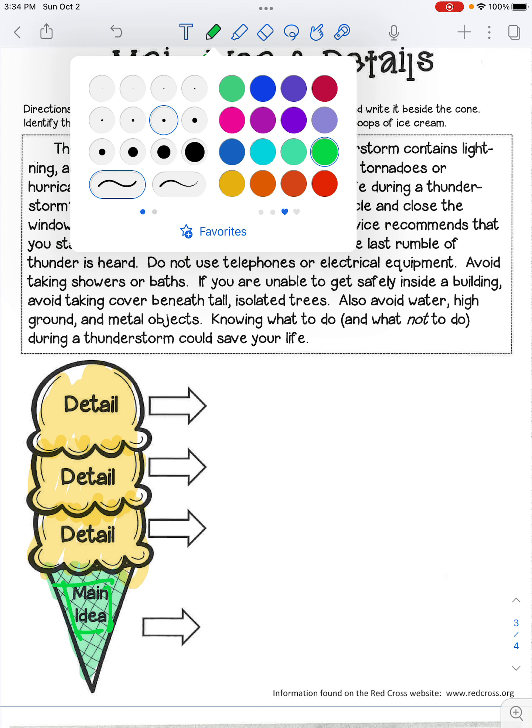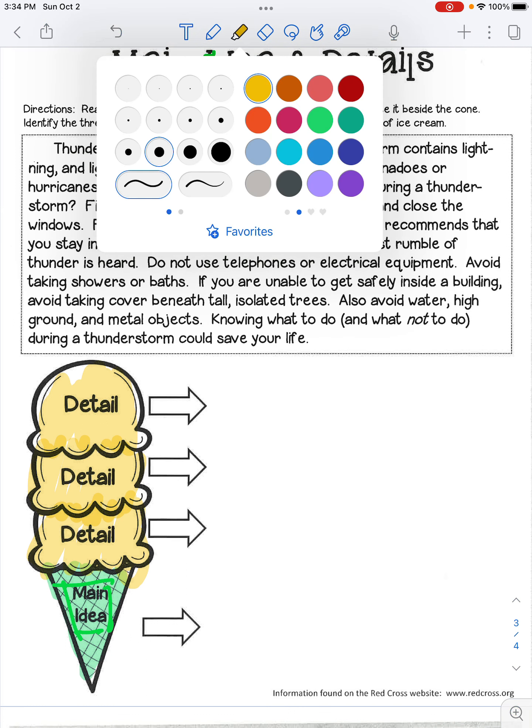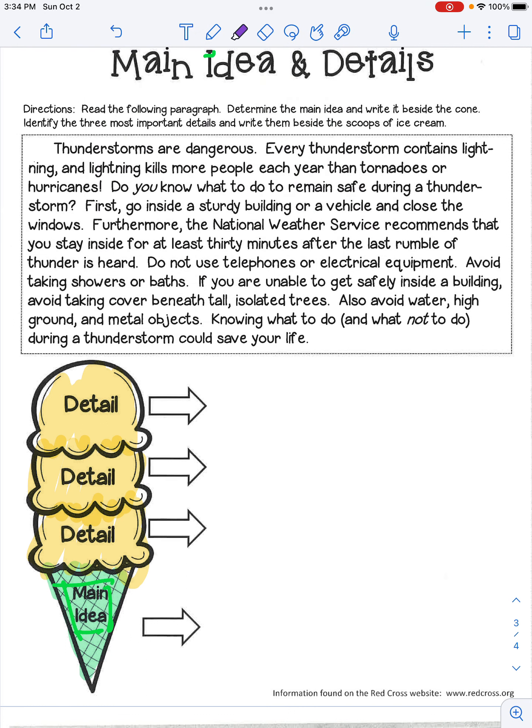So let's go ahead and read this one called thunderstorms. And then you're going to read the following paragraph, determine the main idea, and write it beside the cone. Identify the most important details and write them beside the scoops of ice cream. So your main idea will go here. Your details will, detail number one will go here. Number two, and then number three.